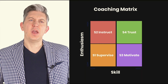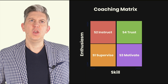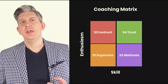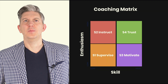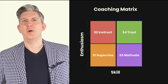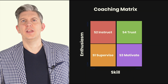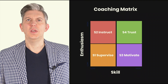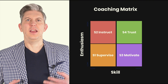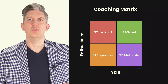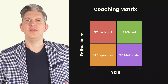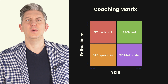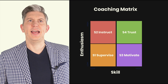If we look at this coaching matrix, it's based around employee skill and enthusiasm. Those people in the bottom quadrant need supervising — they're not particularly skillful and haven't got particularly high enthusiasm levels, so they're going to need a fair amount of supervision. Your coaching approach needs to reflect that.